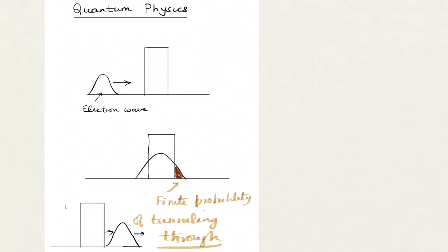This drop in amplitude corresponds to a drop in probability of finding a particle as you look further into the barrier. If the barrier is thin enough, the amplitude may not be zero and you will end up getting a finite probability of this wave function actually passing through this barrier.